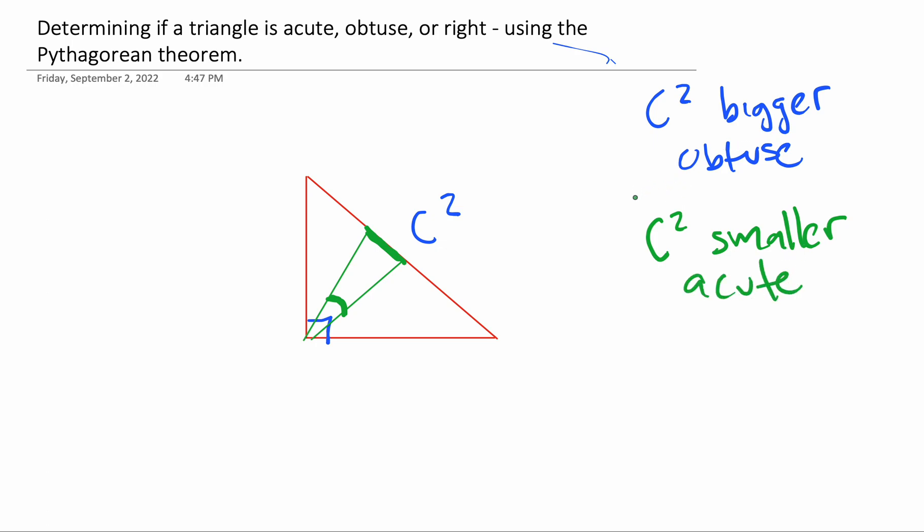And we can think of it that way. So when we have a right triangle, c squared is equal to the other side. Then it's going to be a right triangle. Now, we're going to look at the Pythagorean theorem and see how to apply that. So the Pythagorean theorem says when a squared plus b squared equals c squared, we know it's a right triangle because the Pythagorean theorem only works with right triangles.